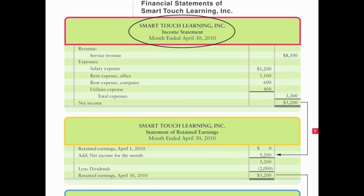The income statement contains two parts: revenues and expenses. You subtract your expenses from your revenues to get net income, or net loss if expenses exceed revenues. Revenues cause increases in retained earnings from delivering goods and services to customers; expenses cause decreases in retained earnings resulting from operations. In this case, revenues exceed expenses, giving us net income of $5,200.